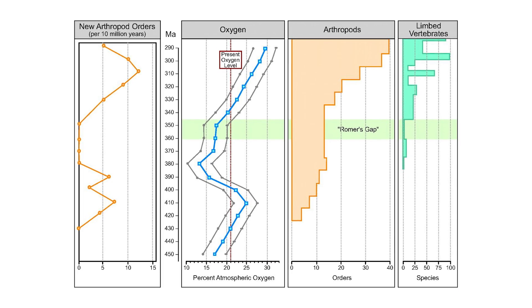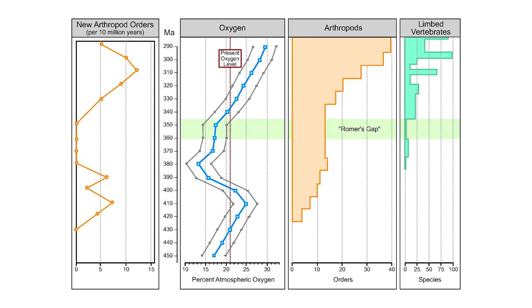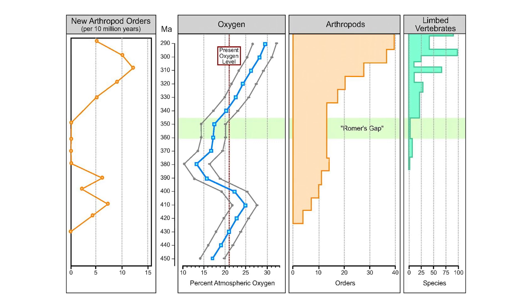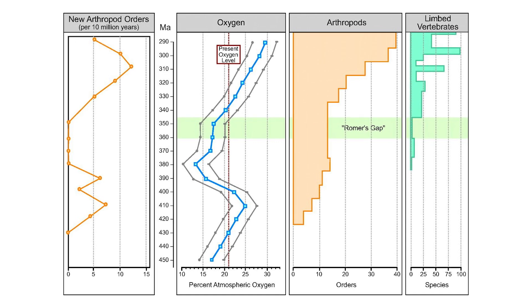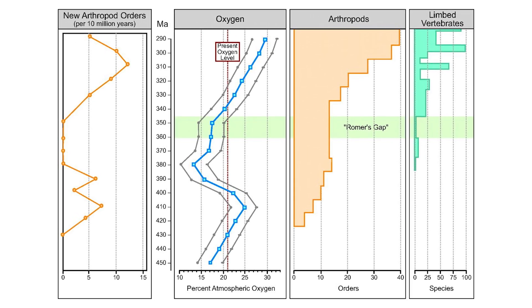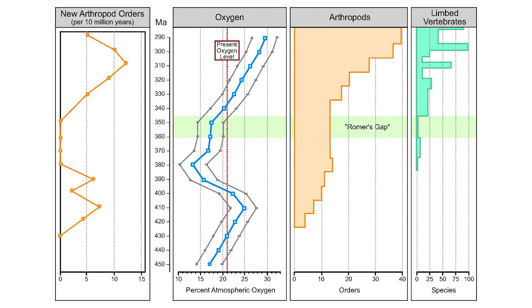This study explains that by tracking the atmospheric oxygen levels at this time in Earth's past, an explanation for the rise, disappearance, and resurgence of tetrapods can be obtained. The hypothesis goes that high oxygen levels in the mid and late Devonian were one of the driving factors in the success of the tetrapods, with such a high concentration enabling these animals to breathe the air more easily, instead of getting the oxygen from the water.